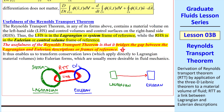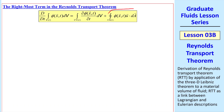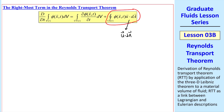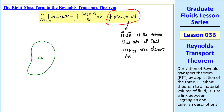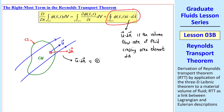We can transform conservation laws, which typically apply directly to Lagrangian material volumes, into Eulerian forms, which is what we like to work with in fluid mechanics. Let's look more closely at the right-most term in the Reynolds Transport Theorem. U dot dA is the volume flow rate of fluid crossing area element dA, where here is our control volume with control surface CS, and some little element of area whose outward normal is dA, and this is our fluid velocity u. We see that u dot dA is positive if u is coming out of the control volume, and u dot dA is negative if u is going in.